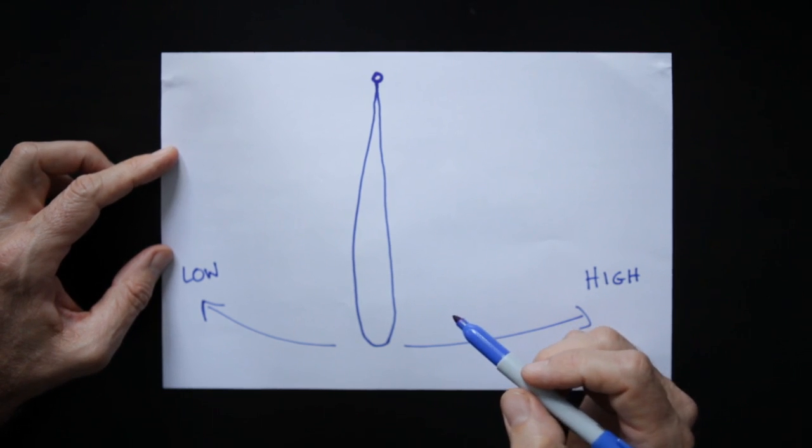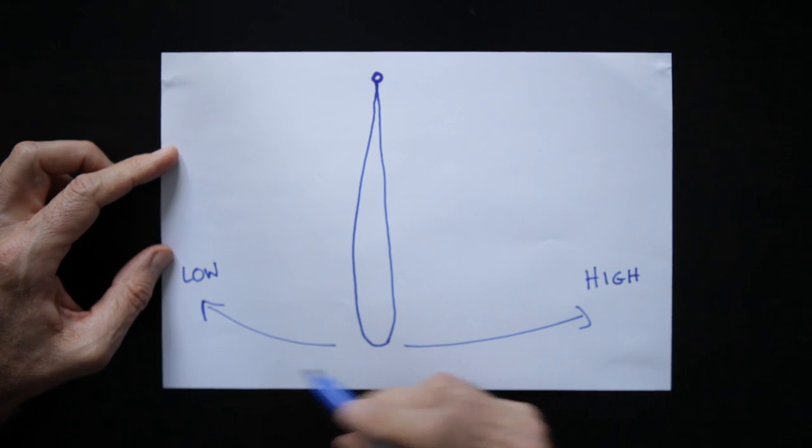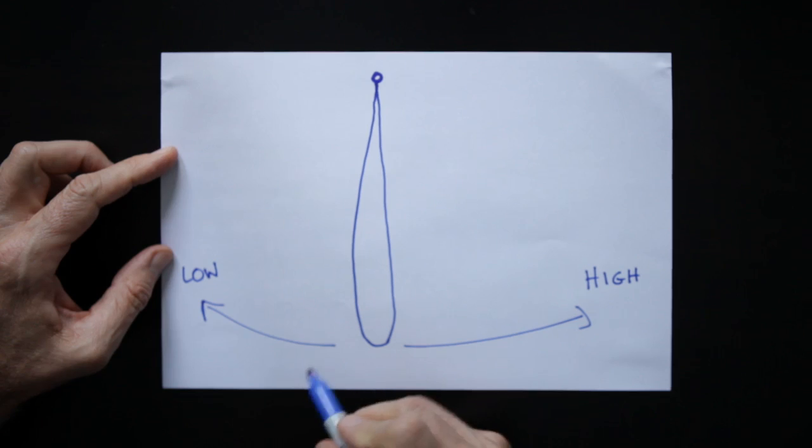What the pendulum teaches us is that our emotions are in a constant state of flux, and that's normal as part of being human. The highs and the lows and the middle, we have the calm.